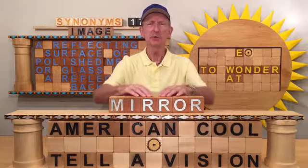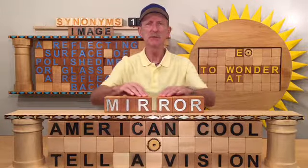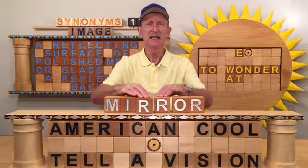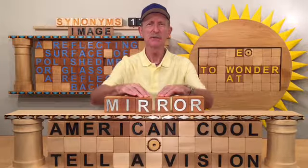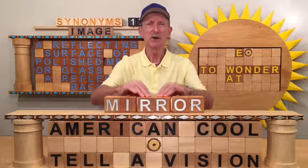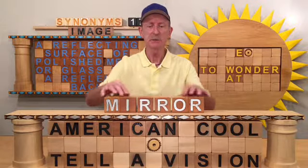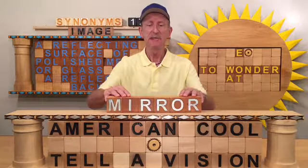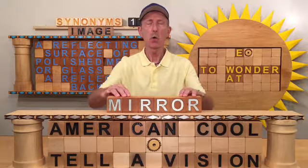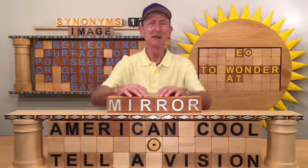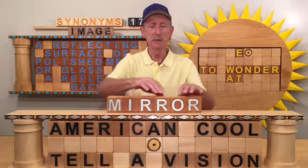If we look right in the middle of this word, we could say that here is a reflection. The R is reflecting back at each other, and that is the core or the central idea of Mira.